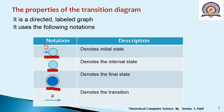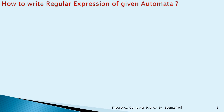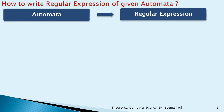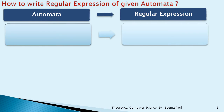The last notation is a link, and across that link there is an input symbol — for example A — which denotes the transition. Now, how to write the regular expression of a given automata: the automata are given and you have to write the regular expression. This automata is drawn using a transition diagram.